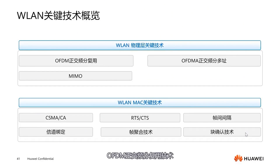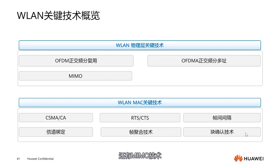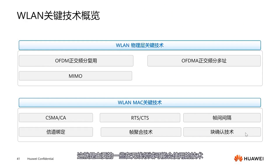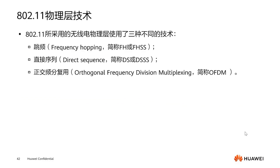OFDM — Orthogonal Frequency Division Multiplexing. The second is OFDMA — Orthogonal Frequency Division Multiple Access. And MIMO technology. Technologies at the MAC layer include CSMA/CA, RTS, CTS, Interframe Spacing, Channel Bonding, Frame Aggregation, and Block Acknowledgement. These are some of the main technologies that might be used in the wireless domain.